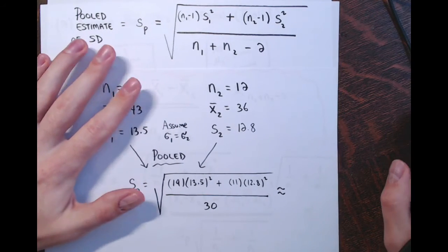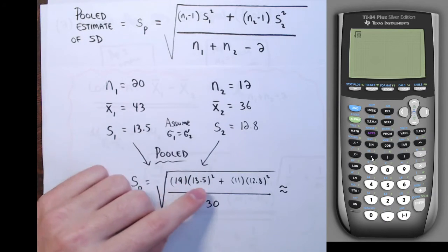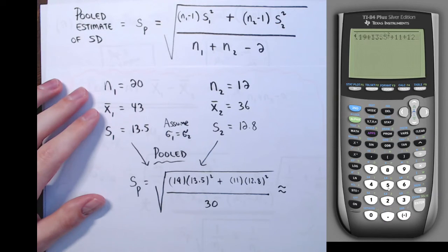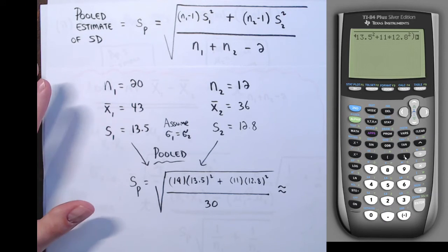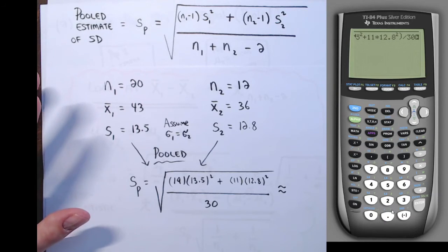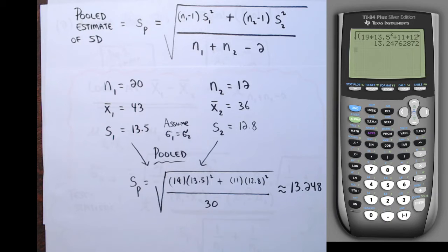I'm going to punch this into the calculator. Taking the square root, in the numerator in parentheses we have 19 times 13.5 squared plus 11 times 12.8 squared, then close parentheses, all divided by 30 — all still inside the square root. That gives approximately 13.248, rounded to three decimal places. That's the pooled standard deviation. I'll leave this on my calculator screen because I'm going to use it again when I calculate the test statistic.